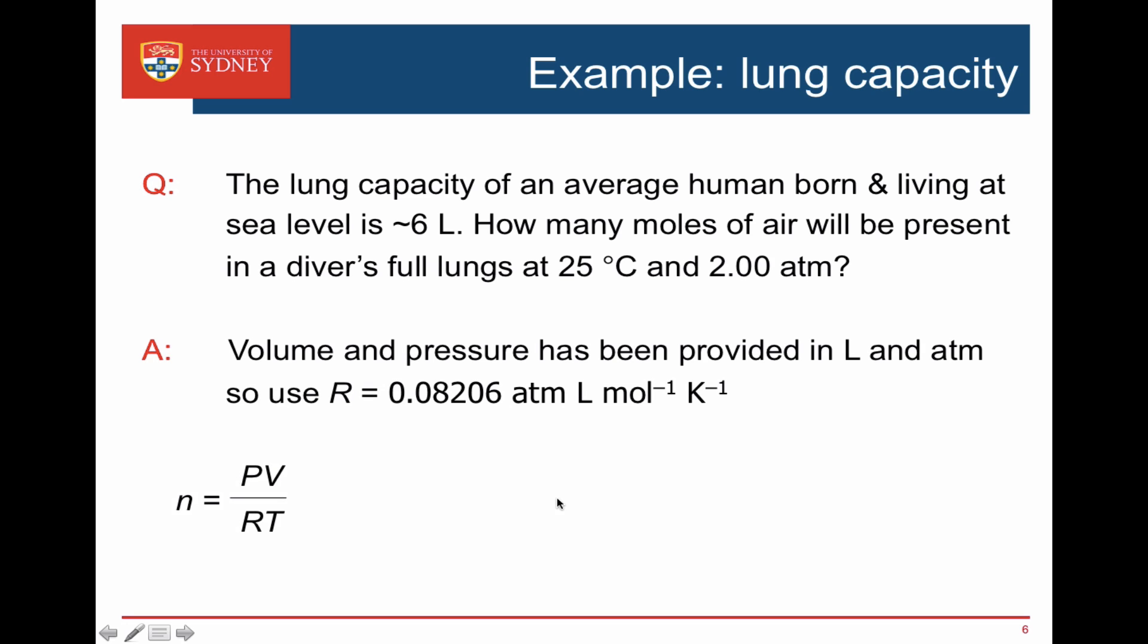PV equals nRT so the number of moles is PV upon RT. Put our values in. Pressure times volume is 2 times 6. R we've chosen the right value of 0.08206. Temperature 25 degrees is the same as 298 Kelvin and we work out there's about half a mole in the average person's lungs at that depth.